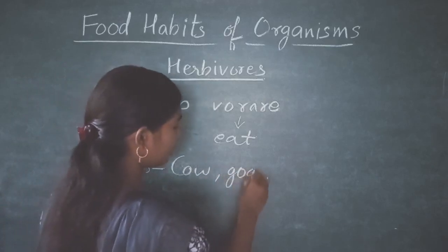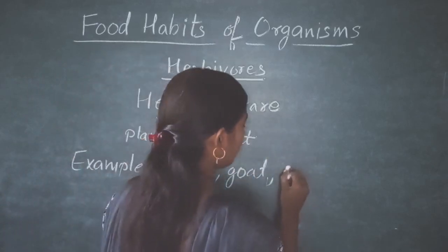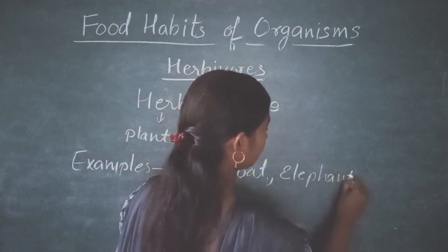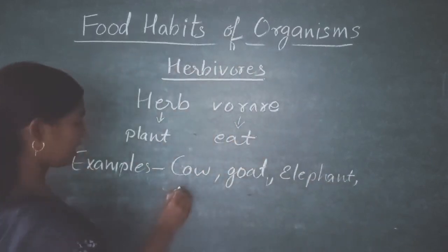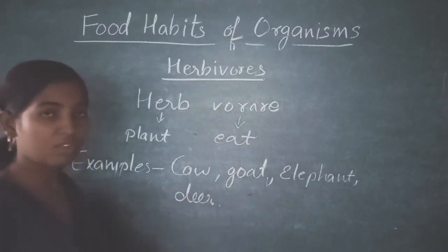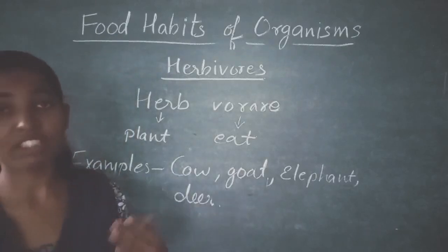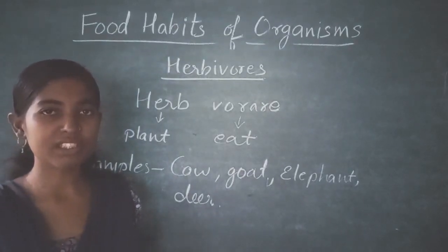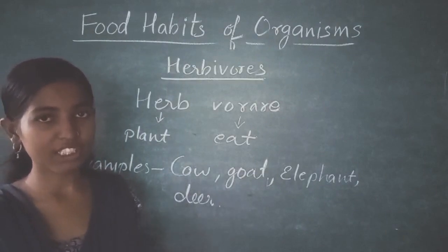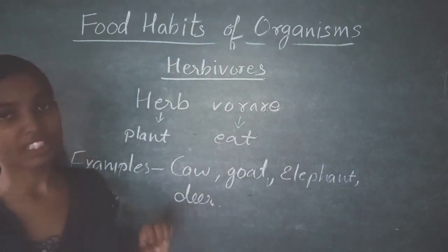Examples of herbivores include cow, boar, elephant, and bear. All of these eat plants, that's why they are known as herbivores. Simply defined, herbivores are those animals or organisms which eat plants.